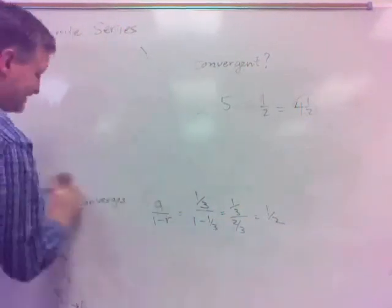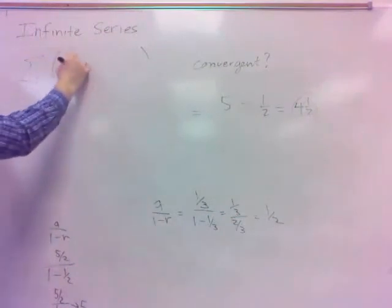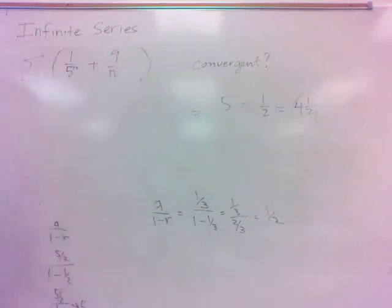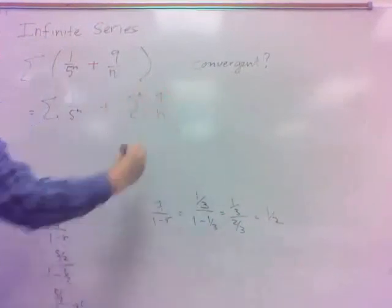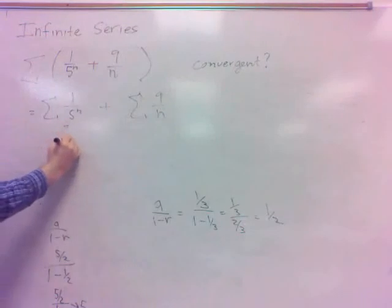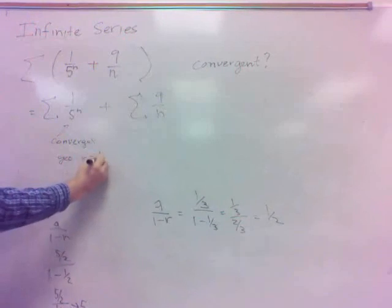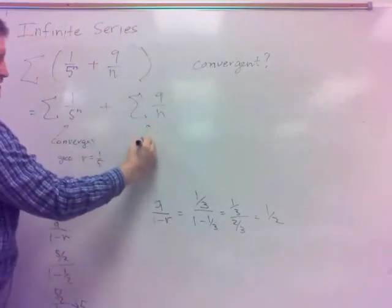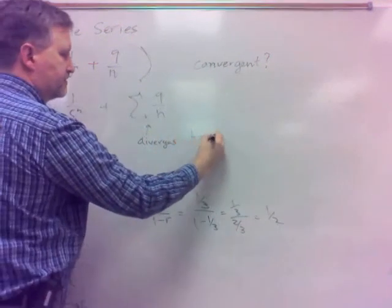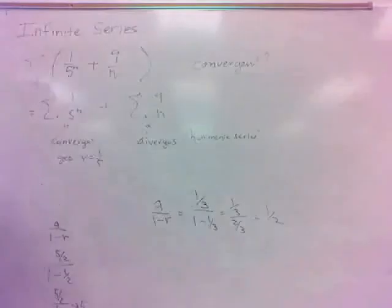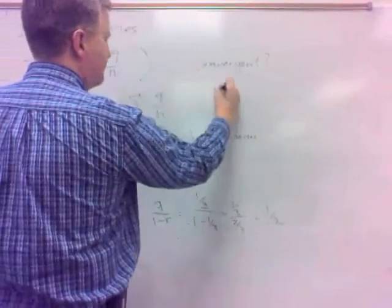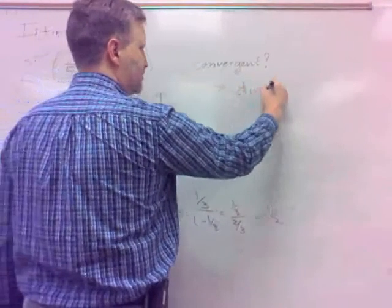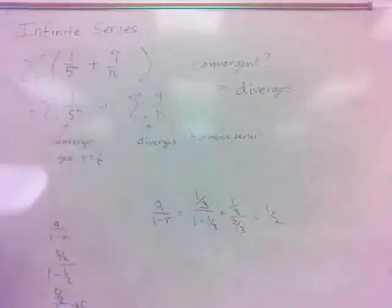What about this one? You've got the sum of 1 over 5 to the n plus 9 over n. Is that convergent? Same deal — you can look at the sum of 1 over 5 to the n plus the sum of 9 over n. Well, this one converges because it's geometric with R = 1/5. What about this one though? Diverges — harmonic series. What have you got there? One that converges and the other diverges. Diverges means it goes out to infinity, so I've got a number plus infinity, which is obviously divergent. So this series will be divergent.